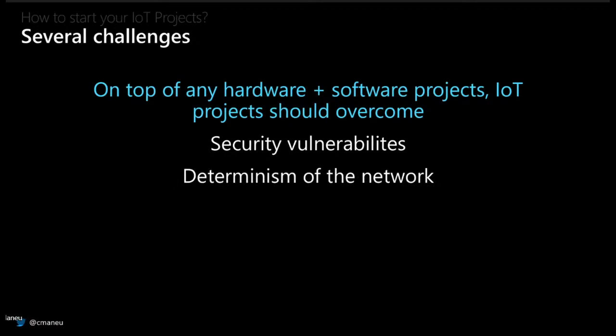The second issue is that as it's the Internet of Things, we really need to connect physical objects to the Internet or some kind of network. But in the IoT space, you cannot always rely on the network. Maybe you're creating a farm IoT system and your IoT objects will be within farmland, far from any Wi-Fi or wired Internet connection. So we need to take that into account when designing our IoT product.